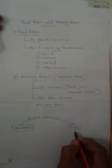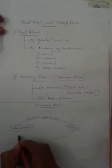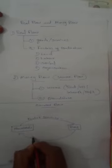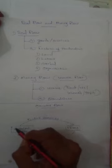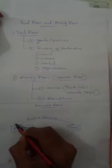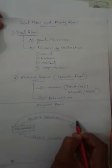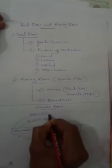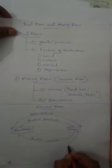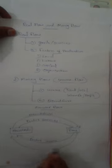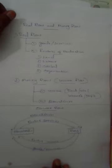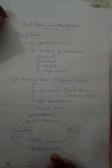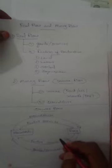The circular flow starts from households. From households to firms, this flow is called factor services. After that, these factor services receive their own income — from firms to households — called factor income. Then again, from households to firms, another flow comes called expenditure. For that expenditure, firms provide goods and services to households, and the circular flow is complete.